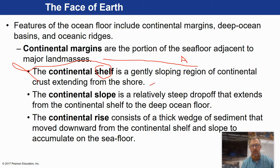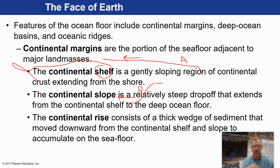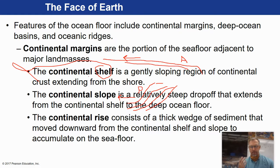The continental shelf tends to be a gradual slope down to the abyss of the ocean — we see that more on the Atlantic side of North America. The continental slope tends to be a really steep drop off to deep ocean floors — we see that more on the Pacific side. Out in Washington and Oregon, that continental slope is not too far off the coast because our continent is actually moving toward the Pacific and moving away from the Atlantic. The continental rise consists of a thick wedge of sediment that erodes off the continent.